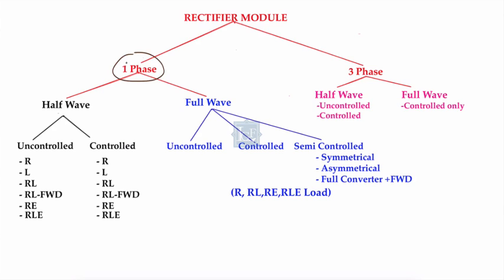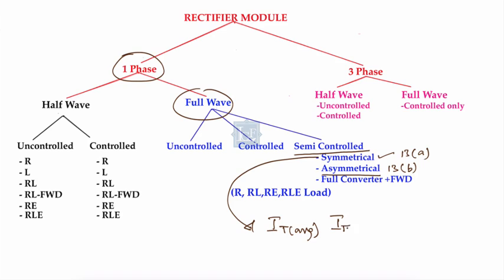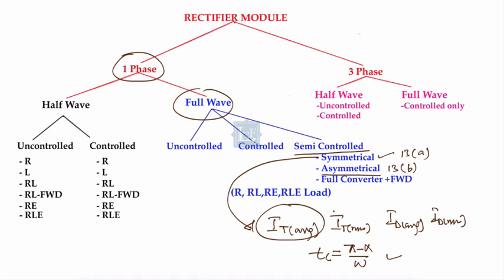In the previous lecture we covered single-phase full-wave semi-controlled rectifier with symmetrical configuration, that is lecture number 13a. In that lecture we derived V0 average, V0 rms, ID average, and ID rms. We also derived the circuit turn-off time equal to (pi minus alpha) upon omega. In symmetrical configuration, the conduction angle of the diode and the conduction angle of the thyristor are equal, so IT average equals ID average equals I0 by 2, and IT rms equals ID rms equals I0 by root 2.